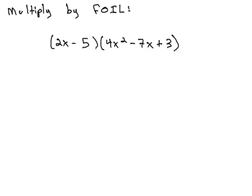We'll show this doing the example 2x minus 5 times 4x squared minus 7x plus 3. FOIL's gonna grab the 2x and distribute it through the parentheses that follow.